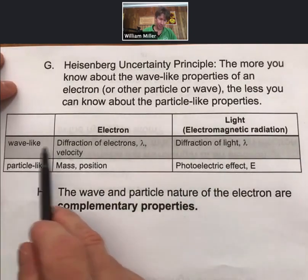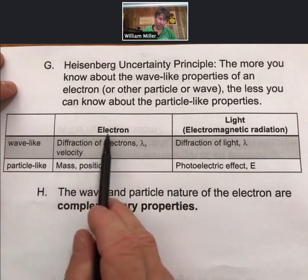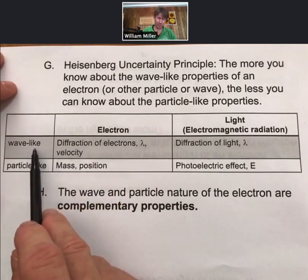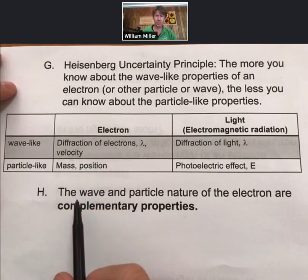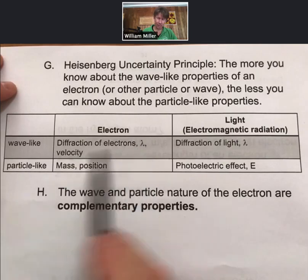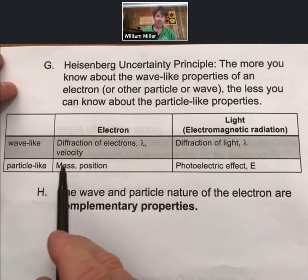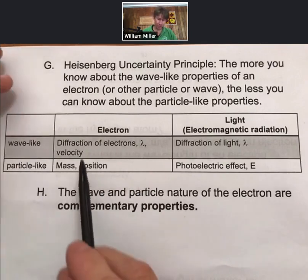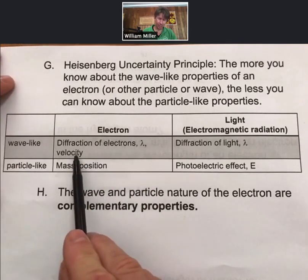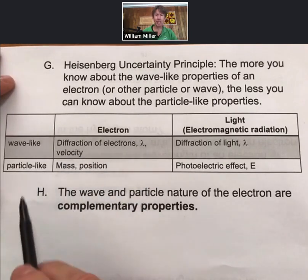So the wave-like property, or what characterizes an electron in terms of the wave-like properties, is the fact that electrons do diffract when they go through a double-slit experiment, and the electrons have wavelengths. And as we've just shown, the velocity and the wavelength are related for an electron.